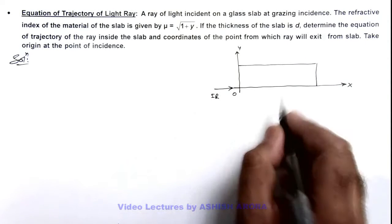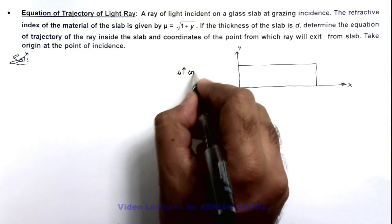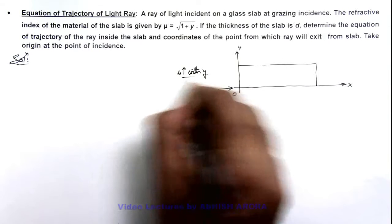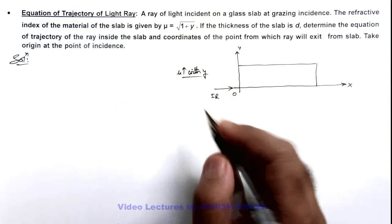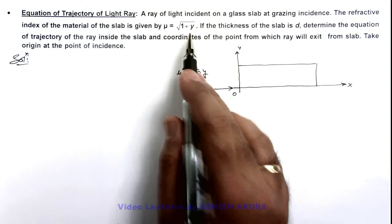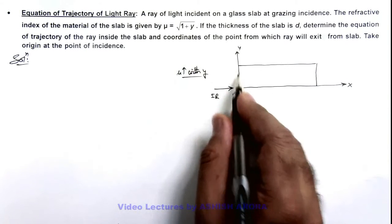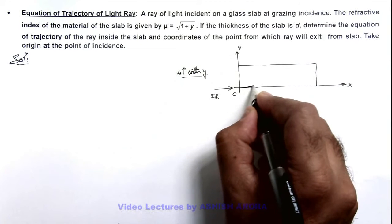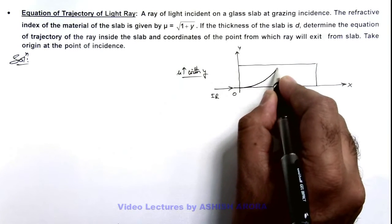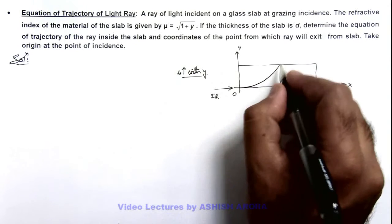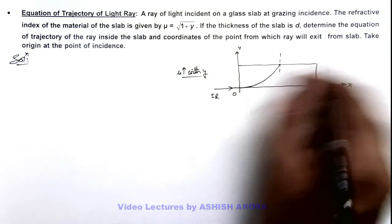As we can see, μ is increasing with y. We already discussed in concept videos about the variation of refractive index. Here you can see as y increases, that light ray will continuously bend towards normal like this, and this is the point from where the light ray will come out.